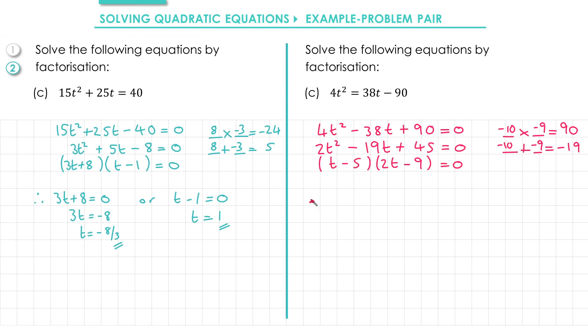That means either the first bracket equals 0, which means t - 5 = 0 and t = 5, or the second bracket equals 0, so 2t - 9 = 0. Adding 9 gives 2t = 9 and then dividing by 2 gives t = 9/2.